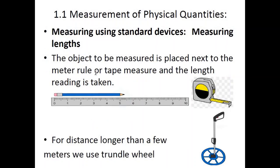Now let's discuss measuring techniques. For measuring length, the first instrument is a meter rule. The object is placed next to it, the zero mark aligns with the start of the object, and the reading is taken. For objects longer than a meter or with curved surfaces, we use a tape measure. For distances longer than a few meters, we use a trundle wheel.